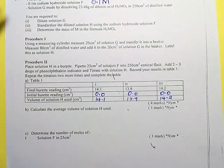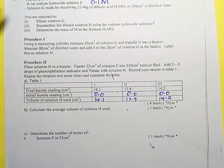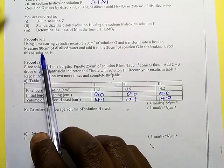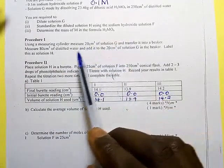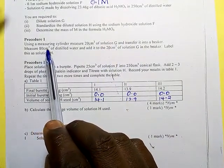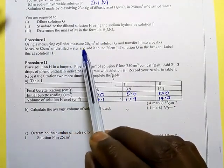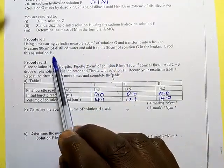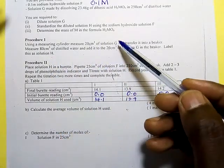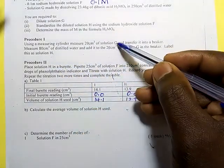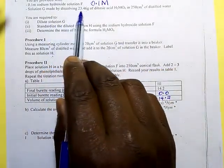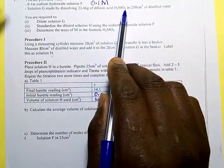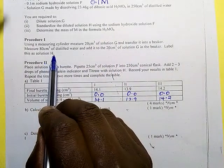First, let us understand what is happening in procedure one and procedure two, because if you don't understand that you won't be able to calculate correctly. In procedure one, we are taking 20 centimeters cubed of solution G and diluting it by adding 80 centimeters cubed of distilled water to prepare 100 centimeters cubed of solution H. Solution G and solution H are one and the same thing — both are the dibasic acid H₂MO₆. The only difference is that H has been diluted.